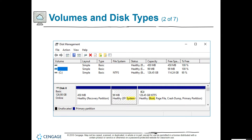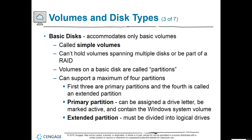Looking at disk management, C is our OS-specific drive where we see boot, page file, and everything on C. We also have a recovery partition and an EFI system partition. Basic disks accommodate only basic volumes, also called simple volumes. They can't hold volumes spanning multiple disks or be part of a RAID. Volumes on a basic disk are called partitions and can support a maximum of four — the first three are primary partitions and the fourth is an extended partition. A primary partition can be assigned a drive letter, marked active, and contain a Windows system volume. An extended partition must be divided into logical drives.